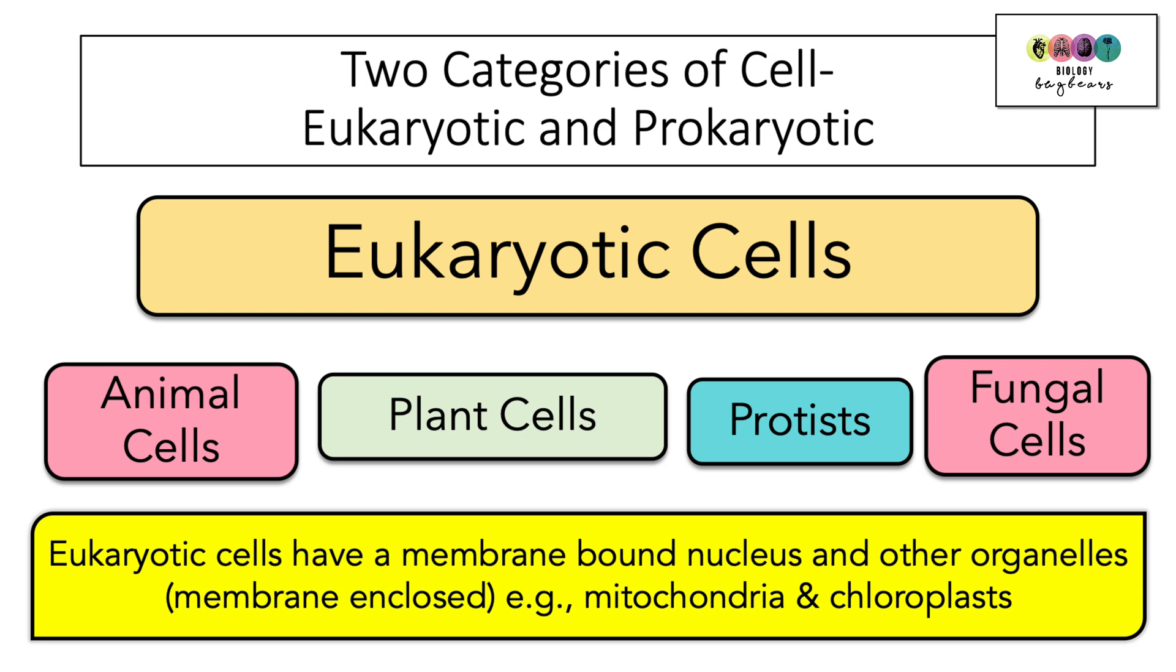For example, mitochondria and chloroplasts. So these little organelles have their own membrane around them. So eukaryotic cells have a membrane-bound nucleus and other organelles and just for your information these are membrane enclosed. For example, mitochondria and chloroplasts.